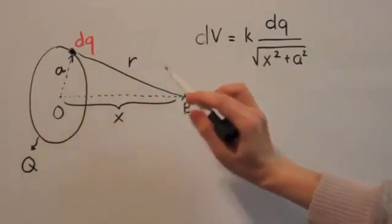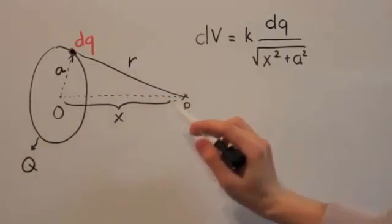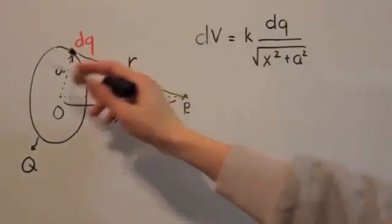Using the trigonometric formula R squared equals x squared plus a squared, we can find R equals square root of x squared plus a squared. The dV here is the electric potential due to the single dq. How about if we want to find the total electric potential due to the whole ring?